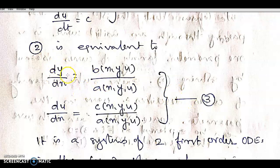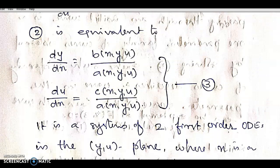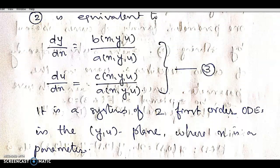Equation 3 represents a system of two first-order ODEs in the y-u plane, where x is a parameter. It is a system of 2 first-order ODEs where x is the independent variable.